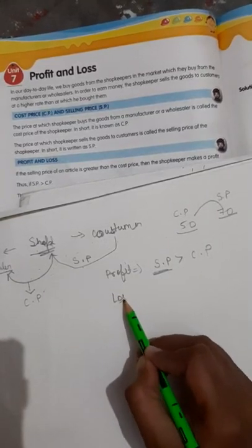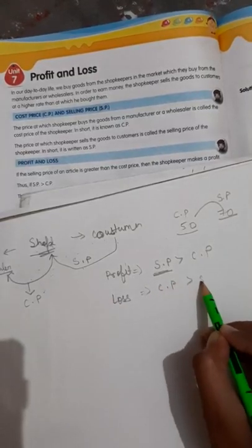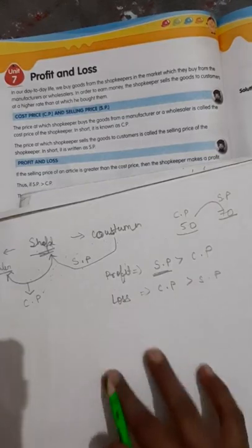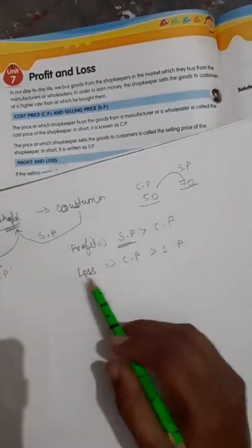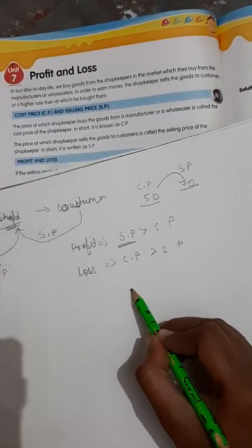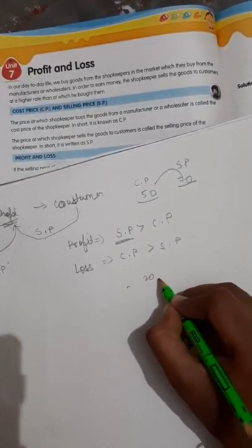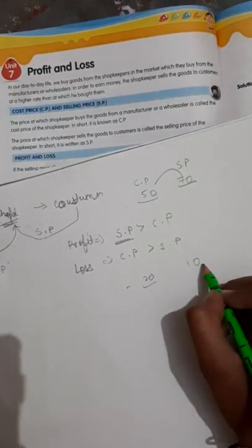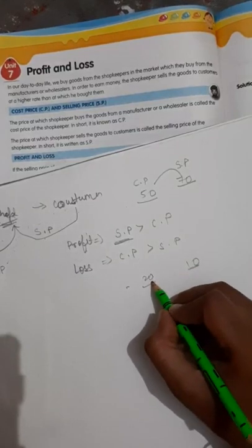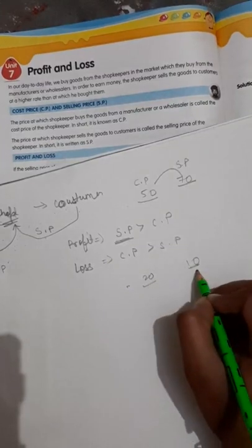If cost price is greater than SP, there is a loss. Suppose you want to close your shop and sell everything. You had purchased an item for 20 rupees, but something happened and you had to sell it for only 10 rupees because nobody was buying it. So you are getting a loss of 10 rupees — you purchased at 20 and sold at 10.